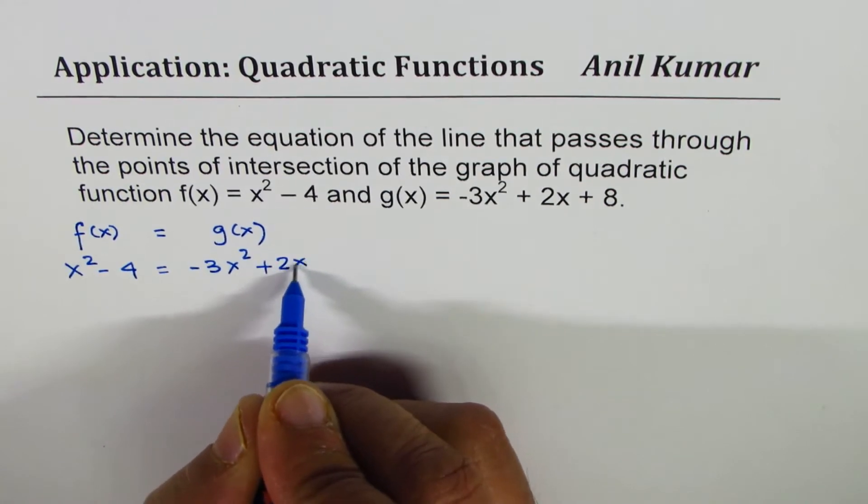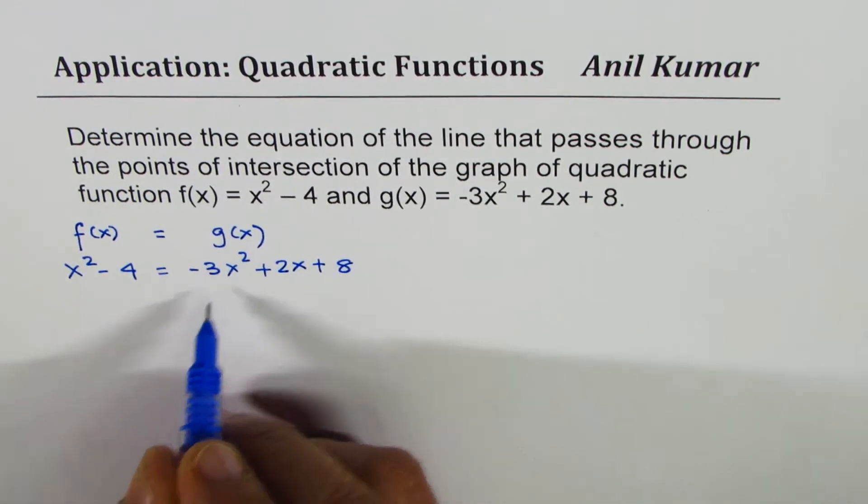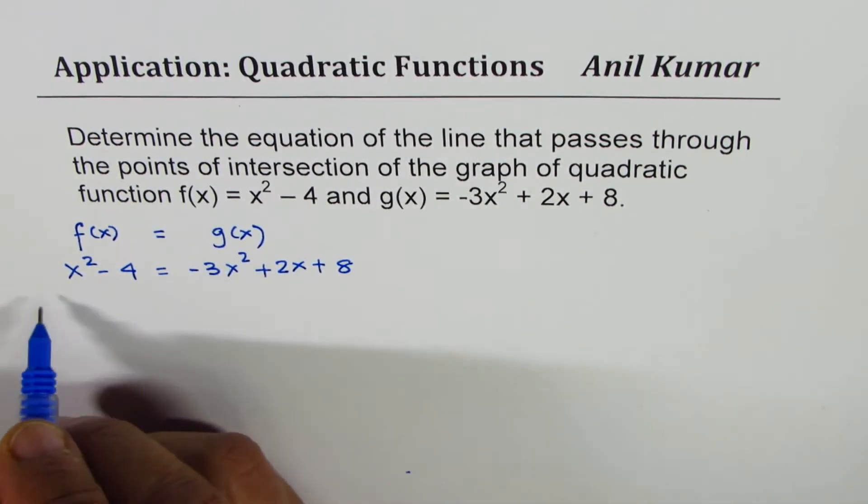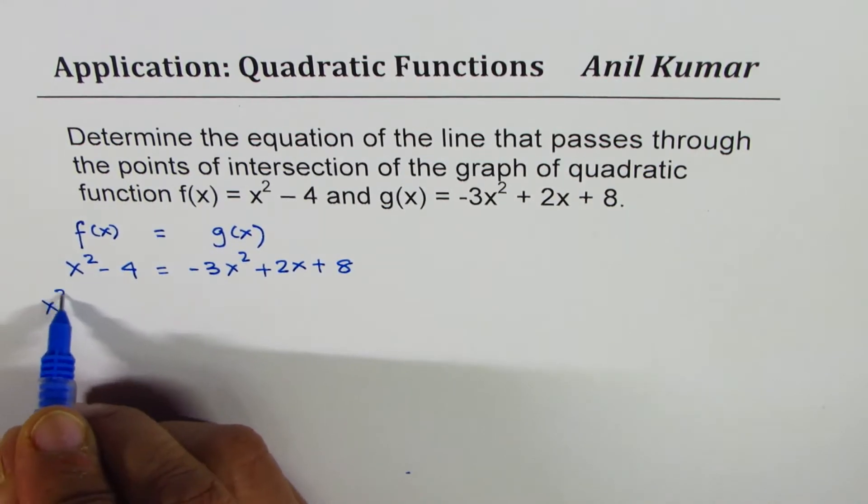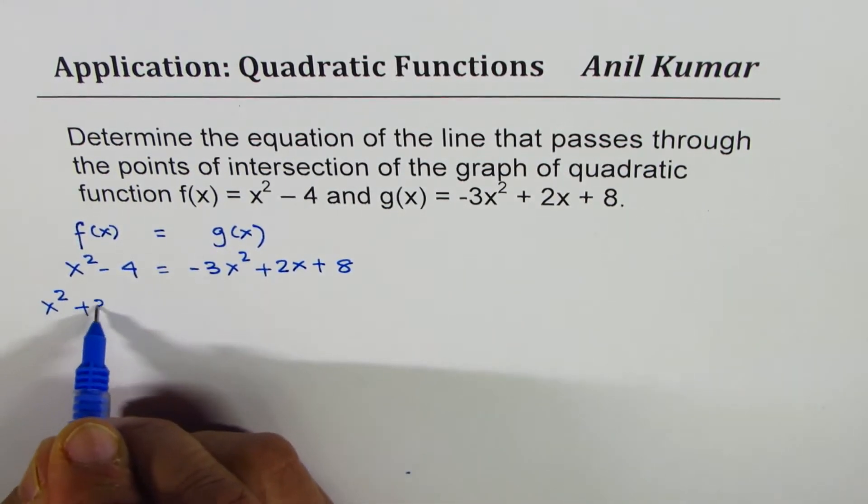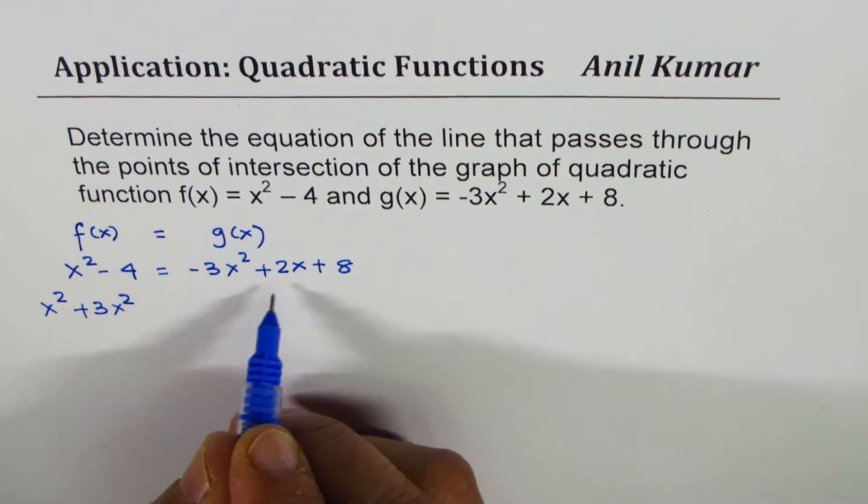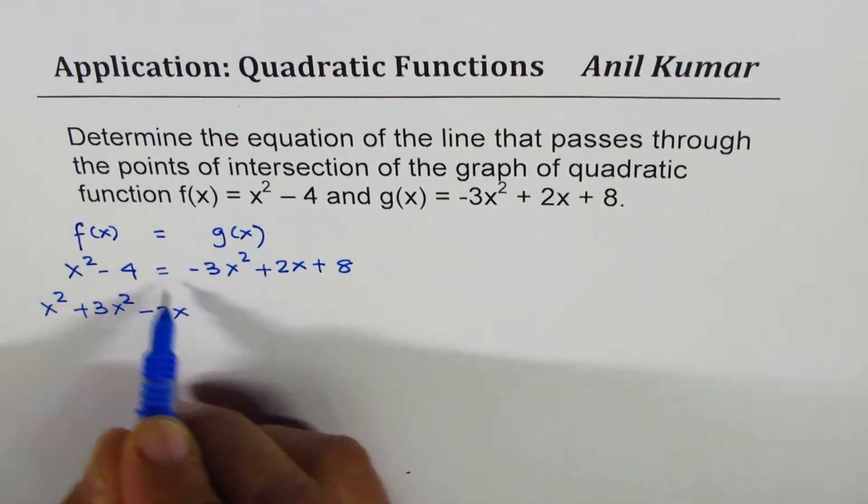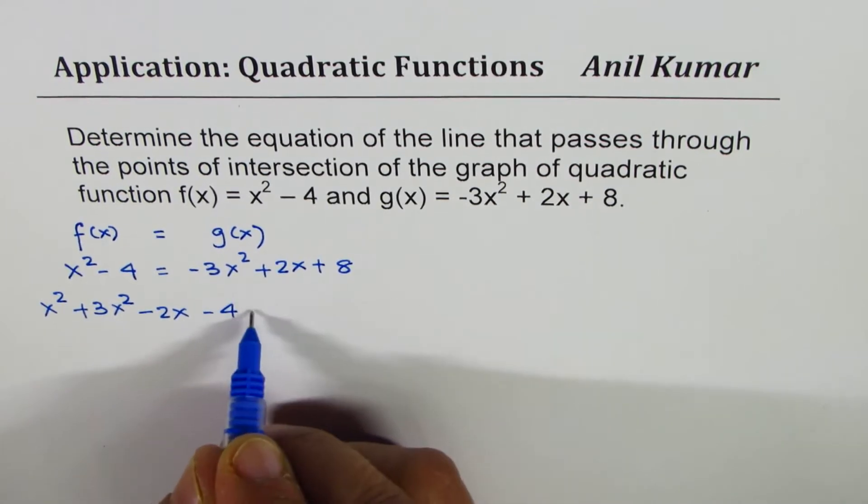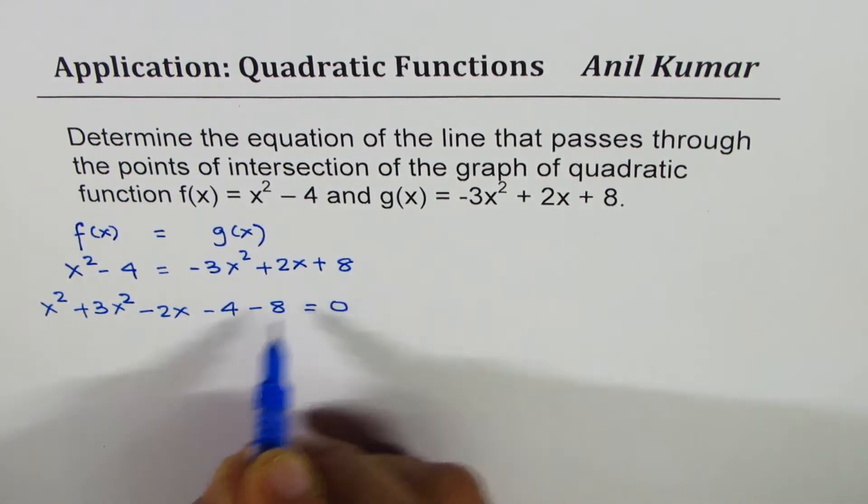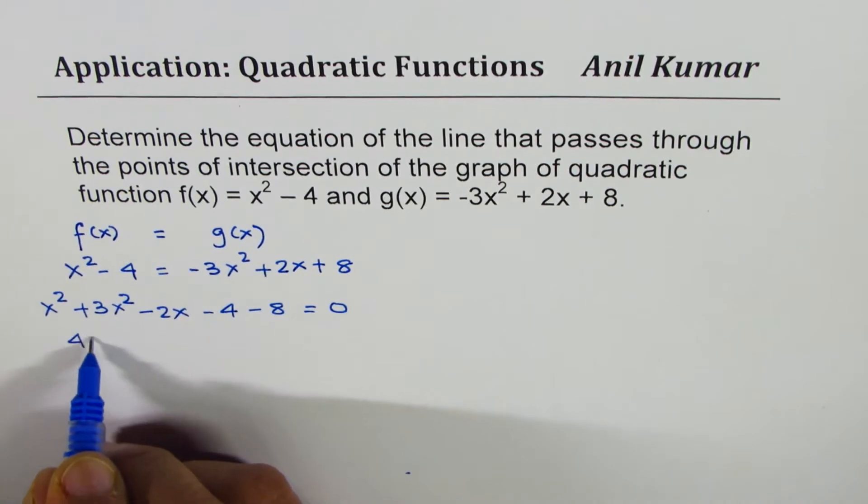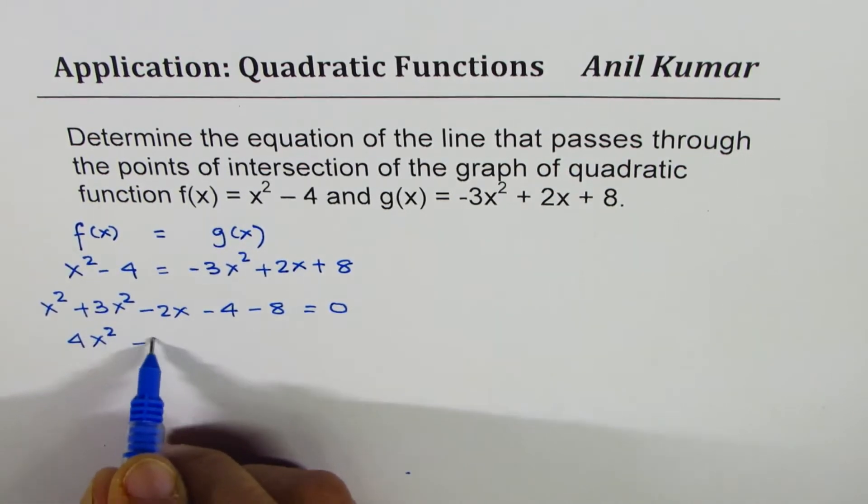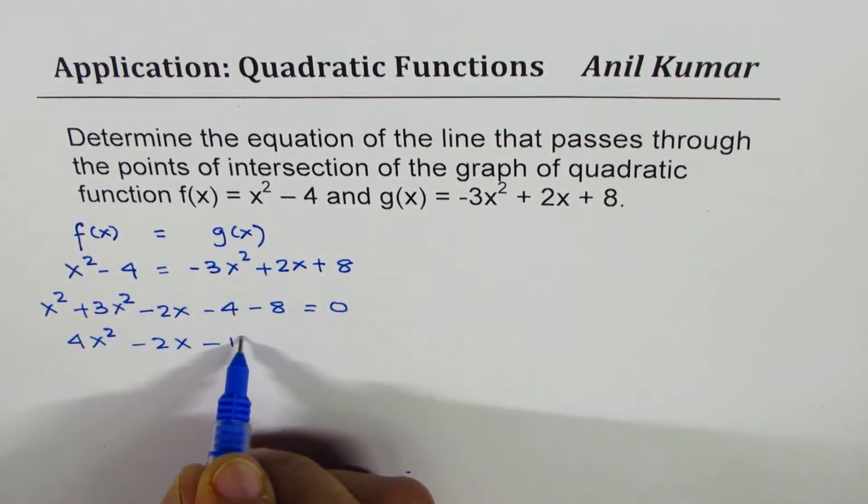Bringing all terms to one side we get x² + 3x² - 2x - 4 - 8 = 0. x² + 3x² is 4x², so we have 4x² - 2x - 12 = 0.